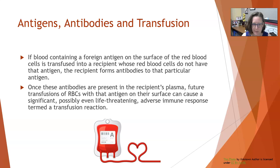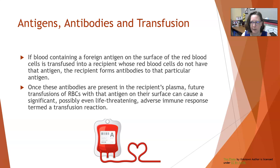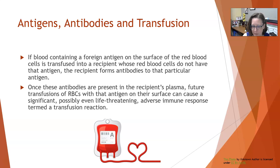Once these antibodies are present in the recipient's plasma, future transfusions of red cells carrying that antigen can cause a significant, possibly life-threatening adverse immune response — a transfusion reaction. For example, if the antibody is a Kell antibody, then anytime that patient needs blood, it will have to be screened and be negative for that antigen. We check for the presence of antibodies beyond just ABO and Rh anytime a crossmatch or order for blood matching is placed for a patient.